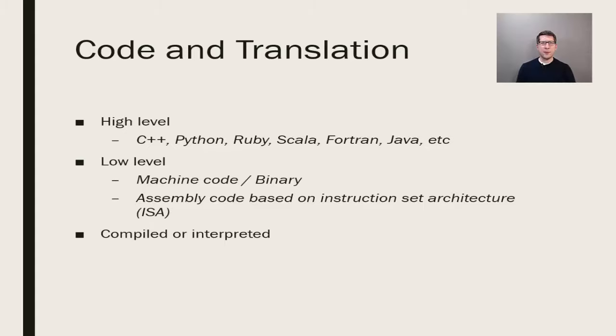The programming language is our interface for speaking to the computer and getting it to follow our instructions. We write code in what we refer to as a high-level language. Some examples of high-level languages include C++, Python, Ruby, Scala, Fortran, and Java, which is the language we're using in this course.